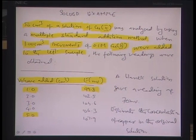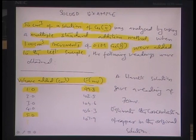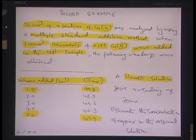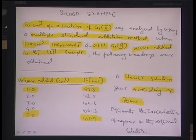Every time an increment is added, the overall volume increases — 1 becomes 51, 2 becomes 52, and so on. After 5 increments, the volume is 55 cm³ and the EMF is 107.9 mV. The blank solution — containing the unknown concentration — gave a reading of 70 mV. We need to estimate the concentration of copper in the original solution. This is a straightforward Gran plot problem.